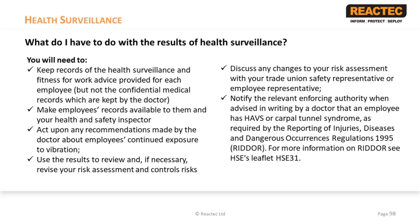Once you have the results of your health surveillance, you need to keep records of your health surveillance and fitness-for-work advice. Confidential medical records should be kept with a doctor. You also need to make sure that records are always available to employees and safety inspectors, and act upon any recommendations made by a doctor about an employee's continued exposure to vibration. The results of health surveillance may mean that you should revise your risk assessments and control measures, and you will need to discuss these changes with your trade union and/or safety representative. Finally, if you receive written confirmation from a doctor that an employee has HAVs or Carpal Tunnel Syndrome, you need to notify the relevant enforcing authority.